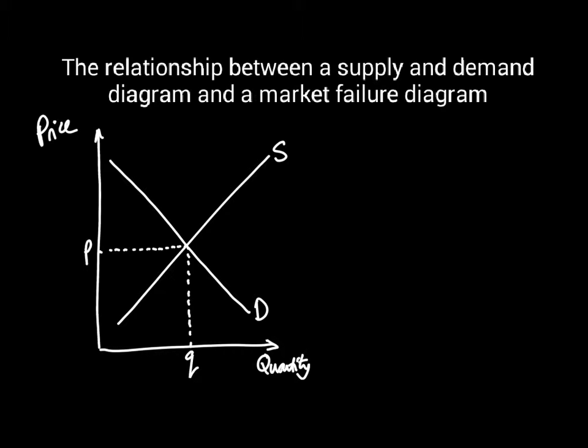For most things, when you think about buying something, you think about the benefit that you yourself will receive from it. So demand is the marginal private benefit, or MPB. It's the benefit that you yourself receive from one additional unit. Your demand is your marginal private benefit - they're the same thing.